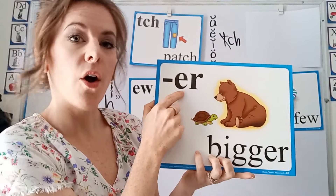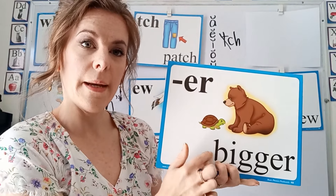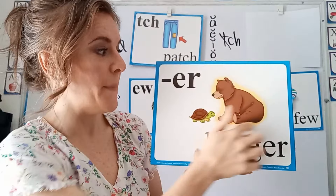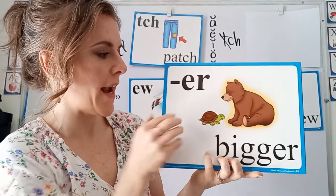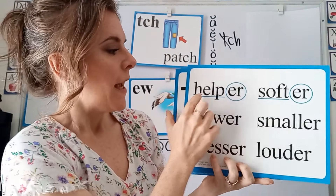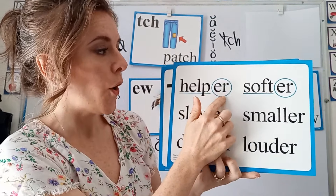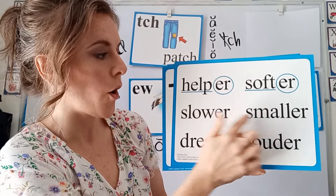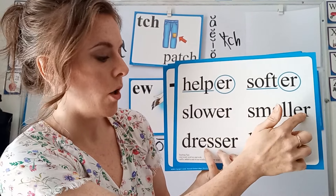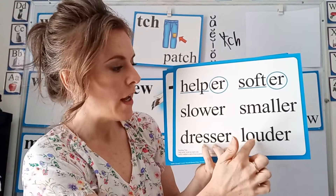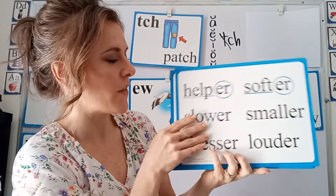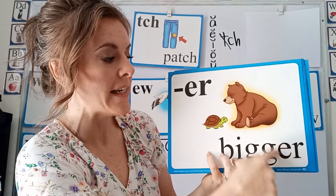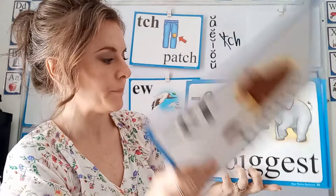Then we have the ER suffix in bigger. The bear is bigger than the turtle. Helper, softer, slower, smaller, dresser, louder. This is a suffix and it comes at the end of our root word.